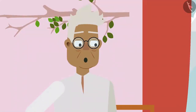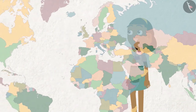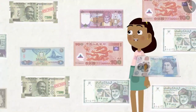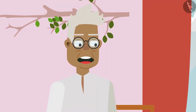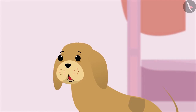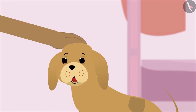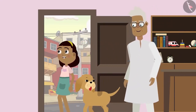Grandpa asks how Zia felt about learning about different currencies. Zia says, 'I enjoyed it so much! When I grow up, I will go to all these countries and buy different things with such currencies.' Grandpa jokes, 'So I will go to eat some jalebis with this money — but the jalebi vendor will probably only take India's currency!' Zia laughs and agrees: 'Yes, grandpa, let's go! Bobo, you also come with us.' Zia, grandpa, and Bobo go out to eat jalebi.